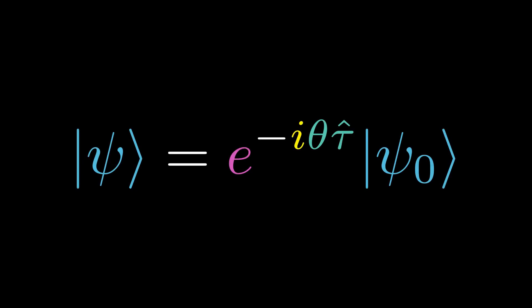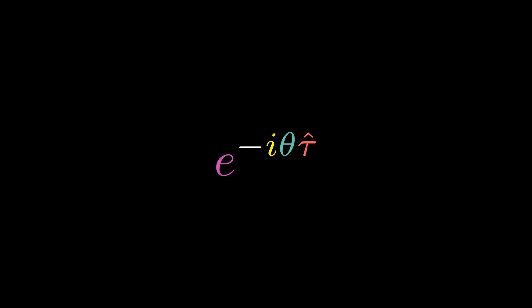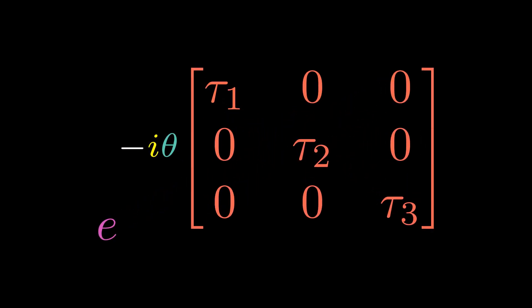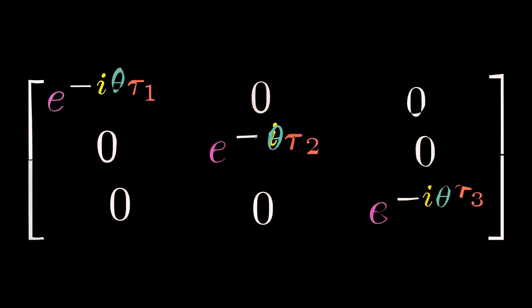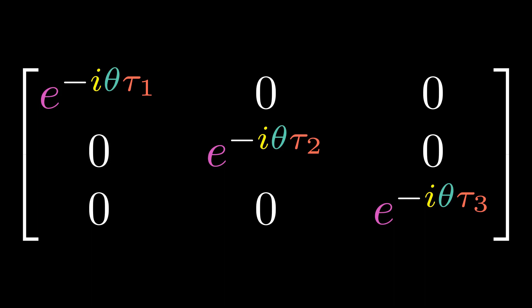The quantum state after passing theta amount of parameter is e to the minus i theta tau hat operating on the original quantum state. E to the minus i theta tau hat is a unitary operator of degree n, U(n), where n is the number of definite states of the observable. We are representing the observable tau hat as an n by n diagonal matrix. Let n equal 3 for the sake of simplicity. We can then calculate e to the power of this matrix. For a diagonal matrix, this is a simple task because the result is just a matrix of e to the power of the diagonal elements.